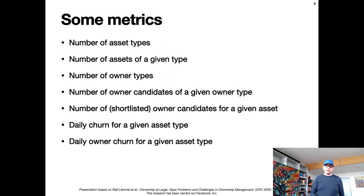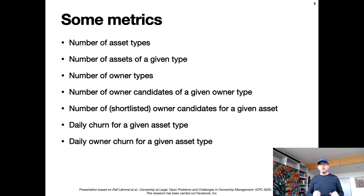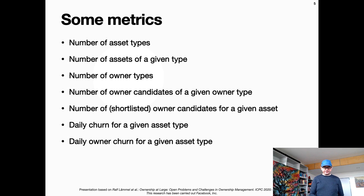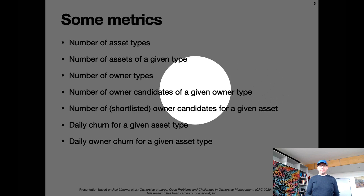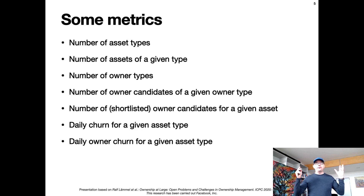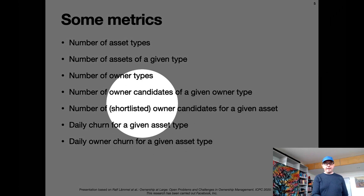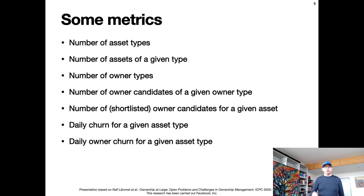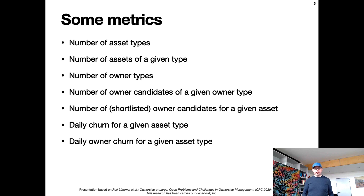How many different owner types are there? Just a few — you might have an individual owner type, and a so-called on-call team owner type. In fact, there are different kinds of teams that can own things. If you look at the owner candidates of a given owner type, this is the number of teams or individuals that can possibly own an asset. But we quickly try to get down to a shorter shortlist of promising candidates — maybe just 10 or 100 per asset. Machine learning then has to figure out how to further prioritize this shortlist.